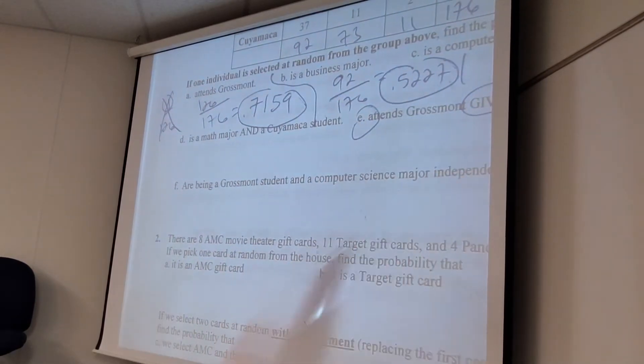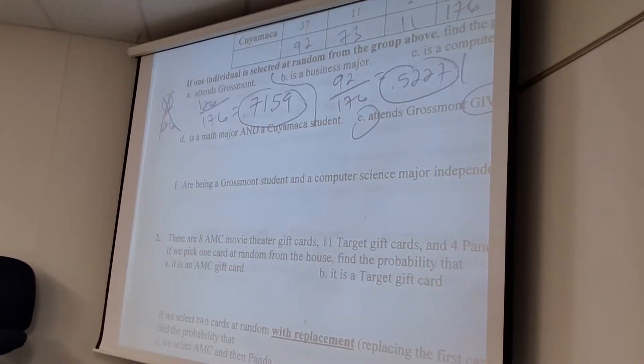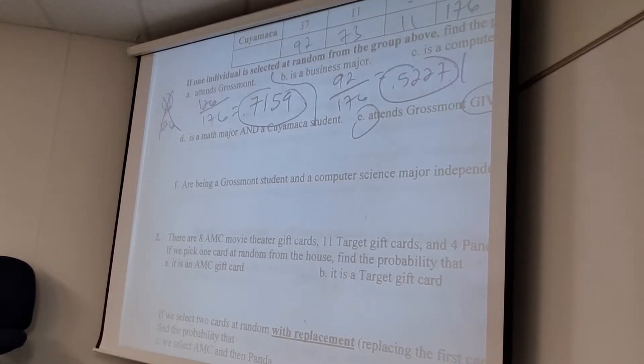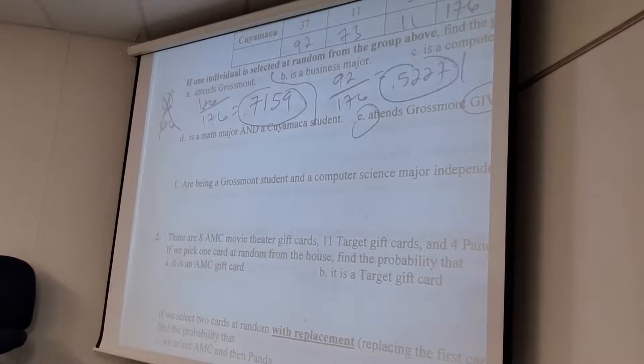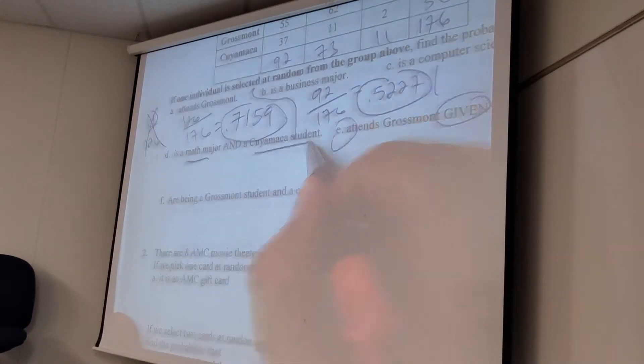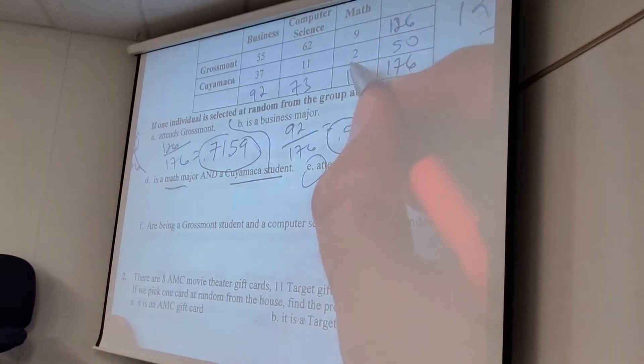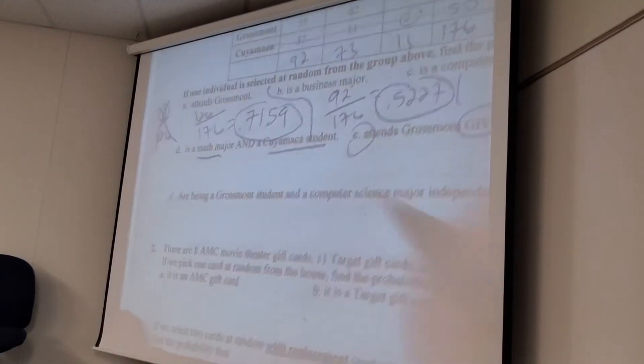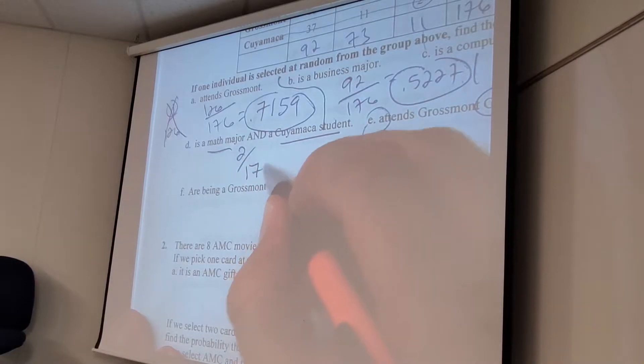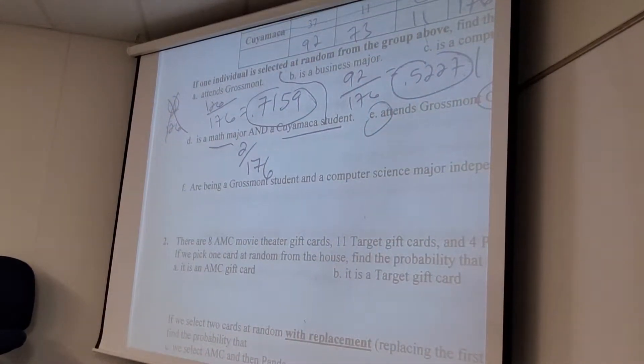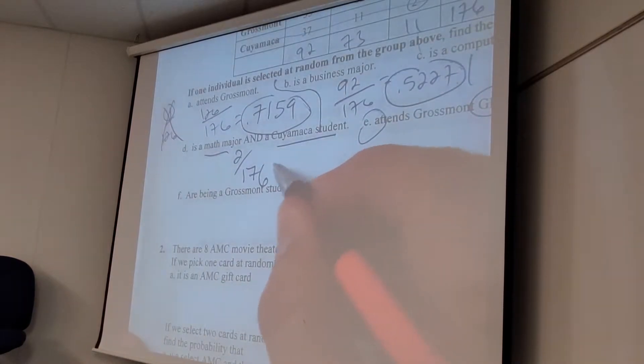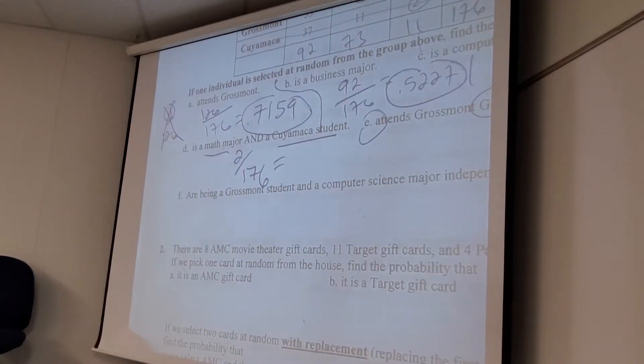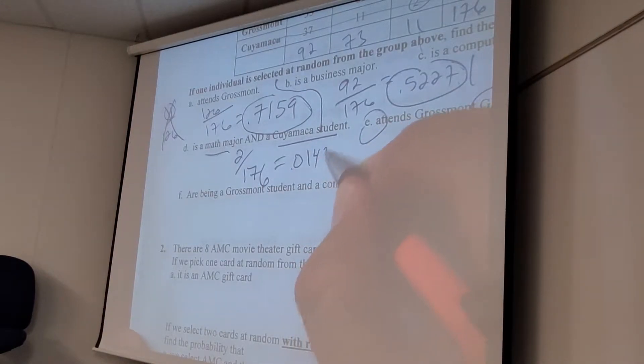And now we've got our and, and this is where, dear God, you've got to somehow remind yourself, do not even look at the formulas for this problem. Here's where it would really screw you up. If you use the formula correctly, it will work, but it will be a ton more work than you have to do. How many people meet both of these requirements? Two. There's only two people that are math majors and Cuyamaca students.